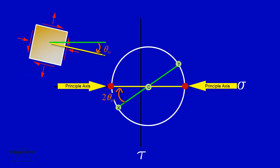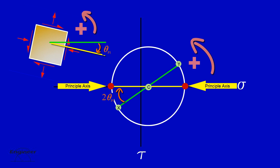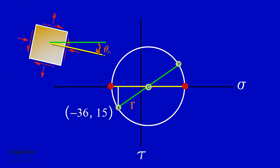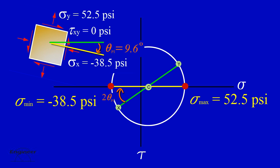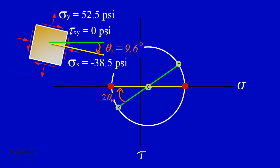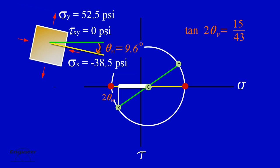It is important to remember that the angle shown on Mohr's Circle is actually double the angle that the element is rotated. Also, angles are positive counterclockwise on Mohr's Circle and positive counterclockwise on the element. Let's calculate 2-theta. Using the coordinates at point X and the radius of the circle as the right triangle, calculate theta. The element experiences the maximum normal stress when rotated negative 9.6 degrees. Notice that shear equals zero. You could calculate 2-theta using the tangent function and the right triangle, but be careful with the length of the sides.